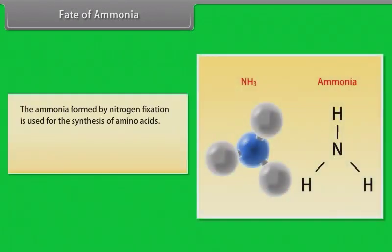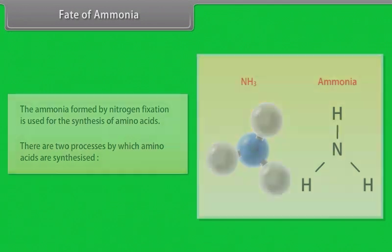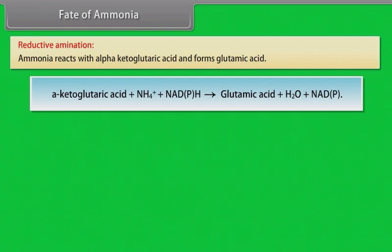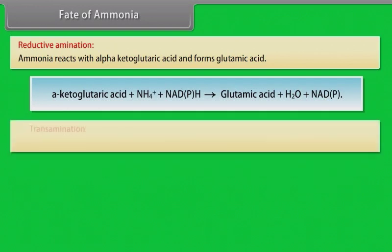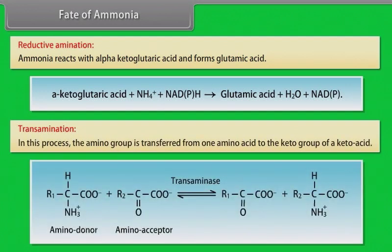Fate of ammonia: the ammonia formed by nitrogen fixation is used for the synthesis of amino acids. There are two processes by which amino acids are synthesized. First, reductive amination: ammonia reacts with alpha-ketoglutaric acid and forms glutamic acid. Second, transamination: in this process, the amino group is transferred from one amino acid to the keto group of a keto acid.